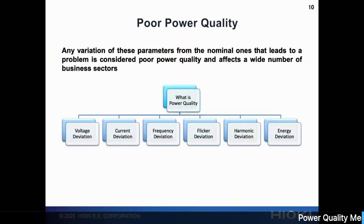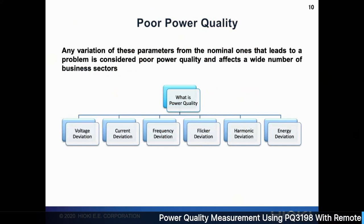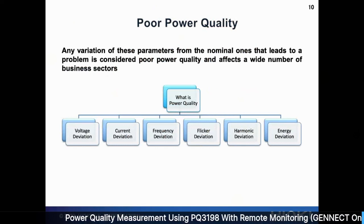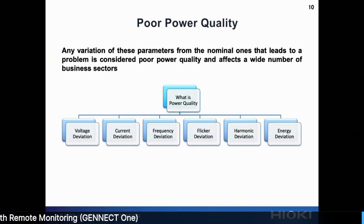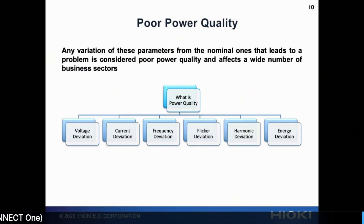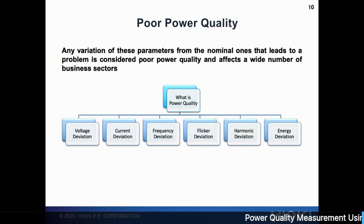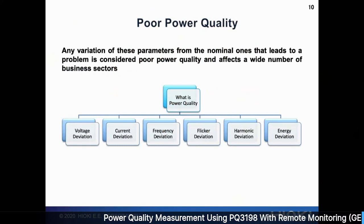Our PQA complies with the IEC standard. The IEC standard IEC 61000-4-30 states that there are six types of deviations: voltage, current, frequency, flickers, harmonics, and energy deviations. All these comply with this standard.